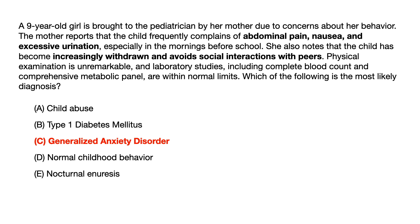Coming back to the question — abdominal pain, nausea, excessive urination, and being increasingly withdrawn and avoiding social interactions with peers are vague physical symptoms that can be associated with any of the first three answer choices. So what's bolded in the vignette will not tell you whether you're dealing with child abuse, type 1 diabetes mellitus, or generalized anxiety disorder. You need to look through the remainder of the vignette and pull out pieces of information that push you in one direction or rule out certain answer choices.